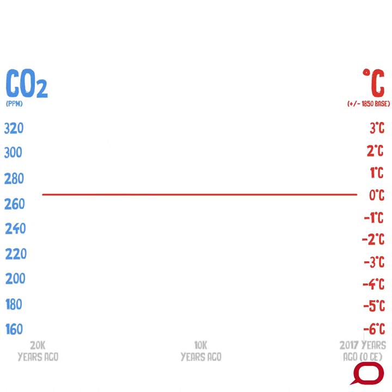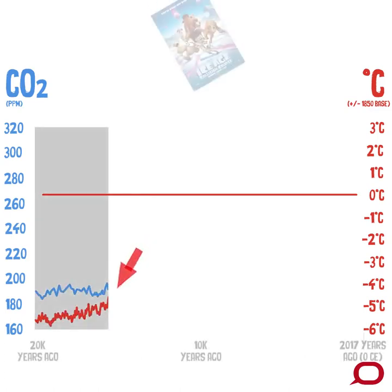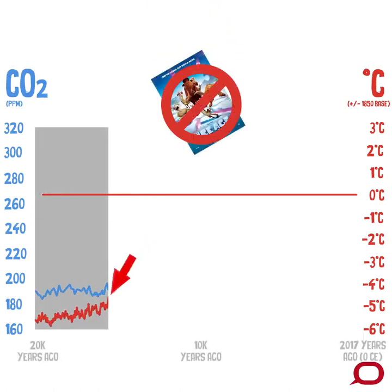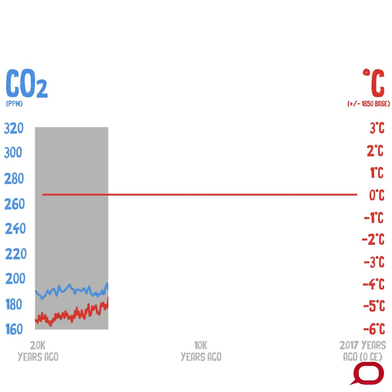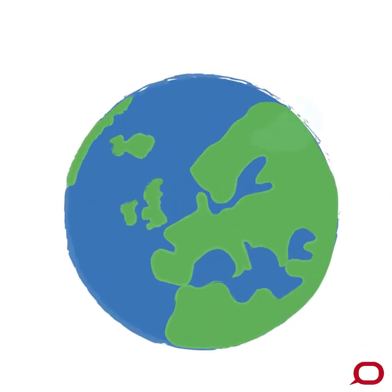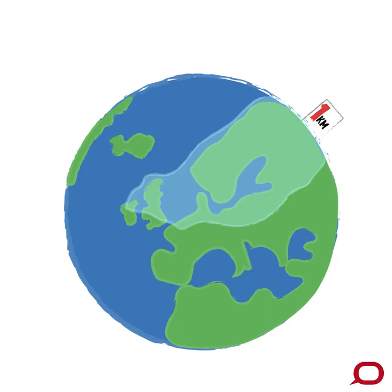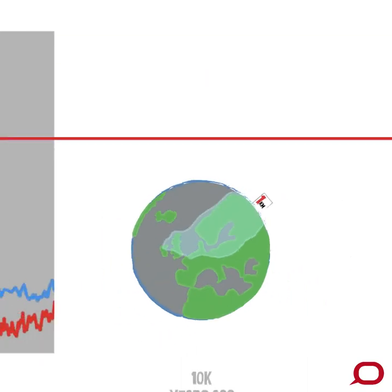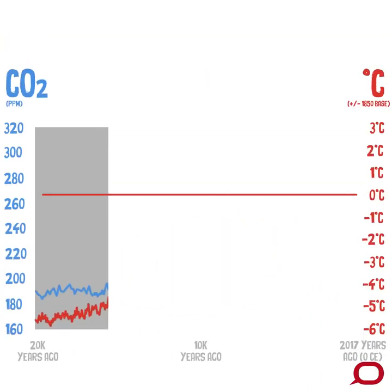At about 20,000 years ago, we have the last ice age. At that time, kilometre-thick ice sheets spread across Europe and North America, eating up water and driving sea levels down to 130 metres lower than where we are today.